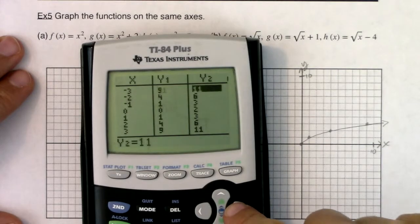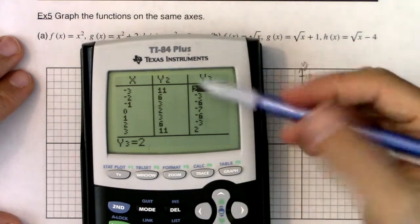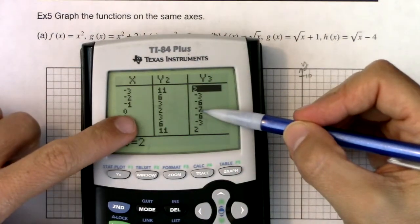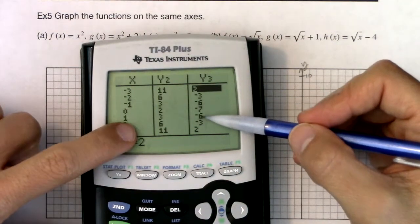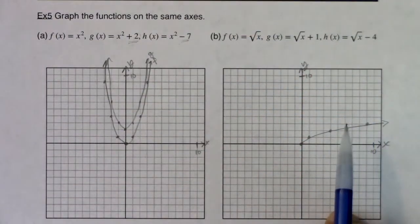If I go to my table, right, you can see at, oops, there it is at zero, my vertex is at negative seven, right? Negative one, negative six, one, negative six. So everything gets dropped by seven units.